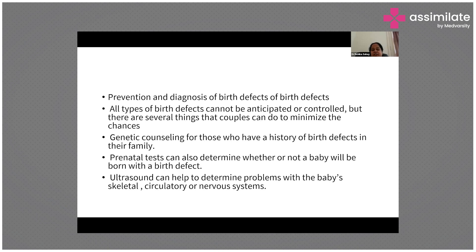Regarding prevention and diagnosis of birth defects: not all birth defects can be anticipated or controlled, but there are several things couples can do to minimize the chances. Genetic counseling is advised for those with a family history of birth defects. Prenatal tests can determine whether a baby will be born with a birth defect, and ultrasound can help identify problems with the baby's skeletal, circulatory, or nervous systems.